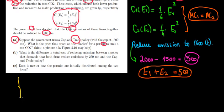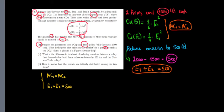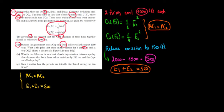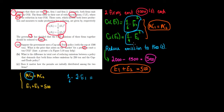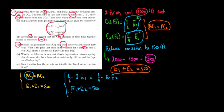We have the marginal cost of firm one equal to the marginal cost of firm two, and E1 plus E2 equal to 500. The marginal cost is the derivative of the cost function. For firm one, the derivative of (1/6)E₁² with respect to E gives (2/6)E1, which is (1/3)E1. For firm two, the derivative of (1/4)E₂² gives (2/4)E2, which is (1/2)E2.